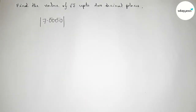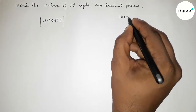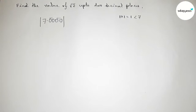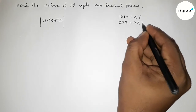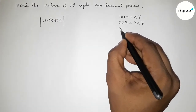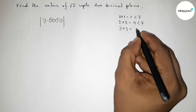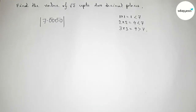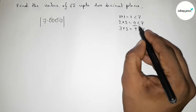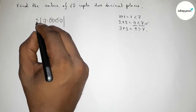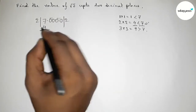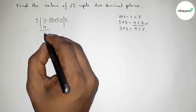Now an important step: we have to choose a number and multiply it by itself, which is less than and almost near 7. Taking 1 times 1 equals 1 — less than 7 but not near. Taking 2 times 2 equals 4 — almost near and less than 7. Taking 3 times 3 equals 9 — greater than 7. So we take 2. Write 2, and 2 times 2 equals 4.